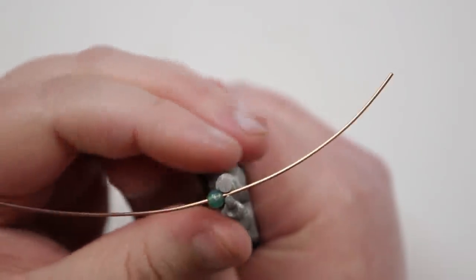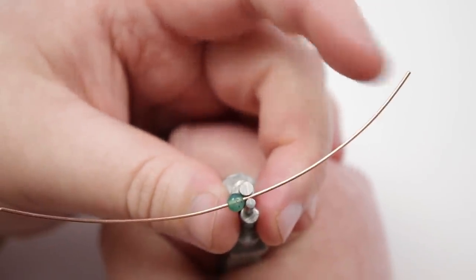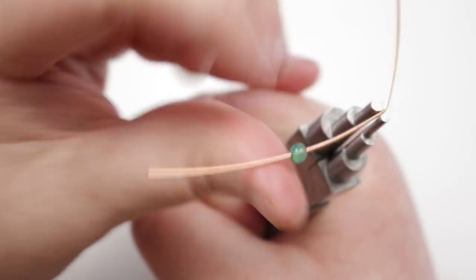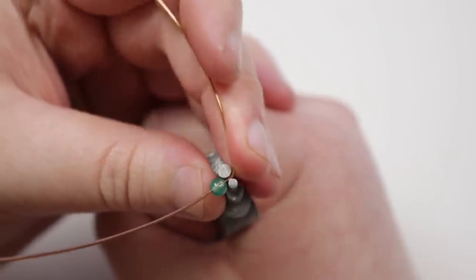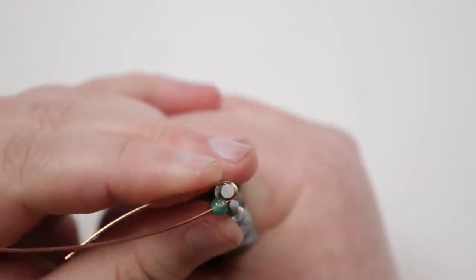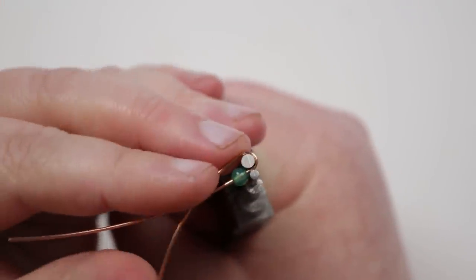My pliers are sitting right next to the bead. Then I take this end of the wire where my pliers are and I start bringing the end around the pliers towards the other side. You can kind of overlap it a little bit like that.